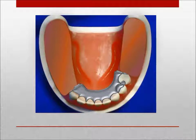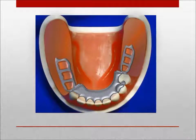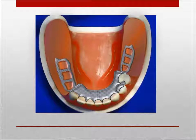Ladder or mesh retained acrylic is helpful for the altered cast impression and future relining. It is easily added and can be used to retain embedded wrought wire used in any necessary repair. The ladder is always terminated with a tissue stop and should have sufficient space for 1.5 mm of acrylic under the metal. The acrylic base is easily repaired, replaced, and adjusted.